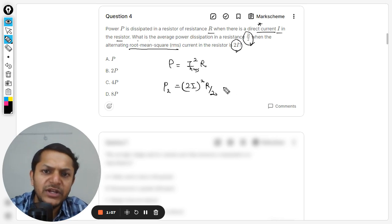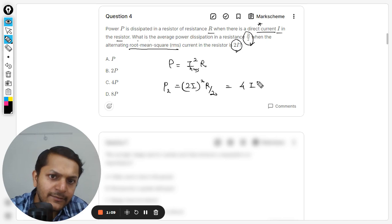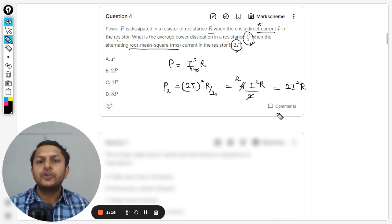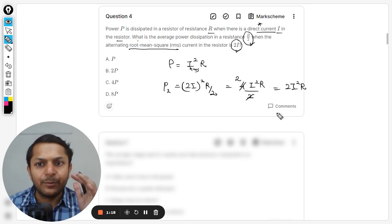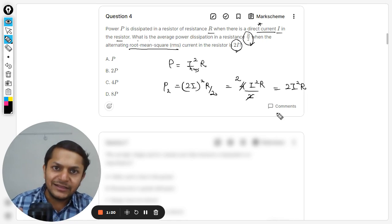4 times I square R divided by 2 is 2, so it is twice of I square R. Twice of I square R is the power dissipated in the second cycle.